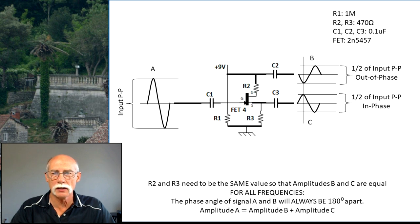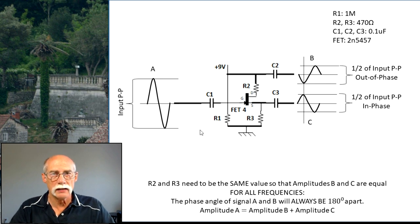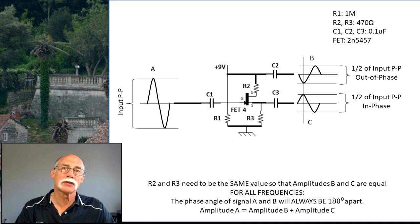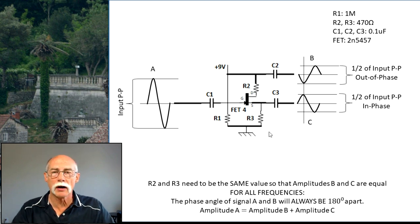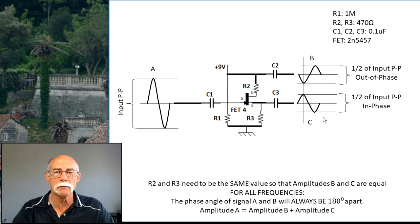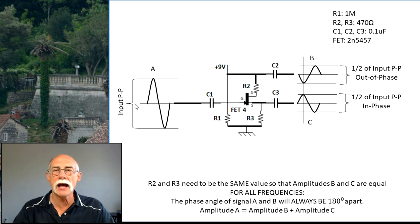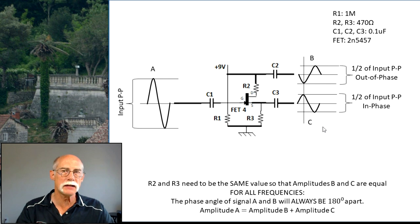On screen is the circuit. C1 is the blocking capacitor for DC — it will pass only AC. R2 and R3 are set the same so that the amplitude of B and C — one being out of phase, one being in phase — are exactly the same. The amplitude of A is equal to B plus C. This is what a phase splitter does.